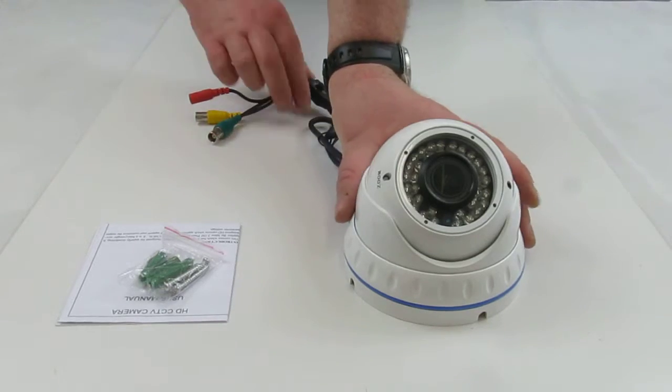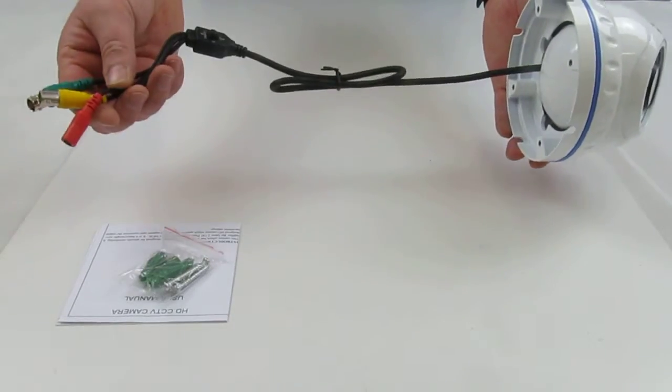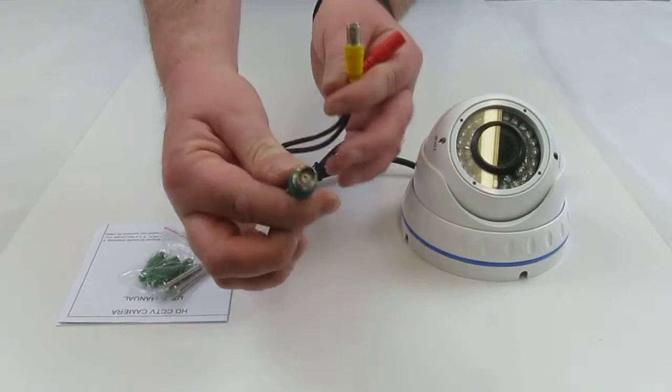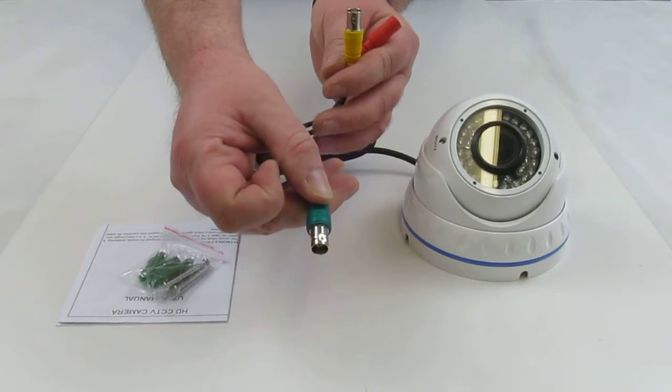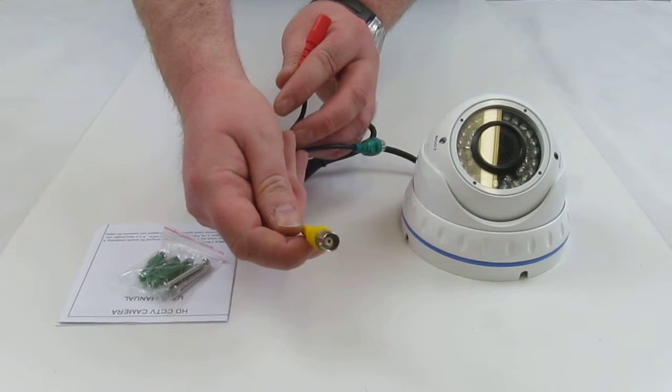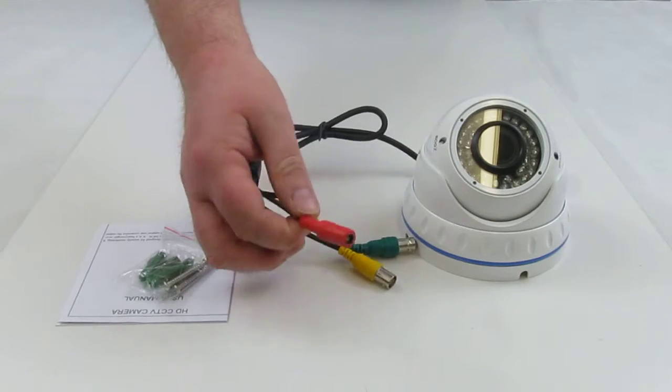The cable comes through the rear of the camera. The cable is approximately two feet long. It has three connections: a green BNC which is the high definition connection, a yellow BNC which is a standard definition connection, and a red DC jack which is the power connection.